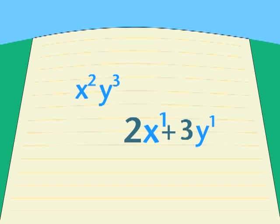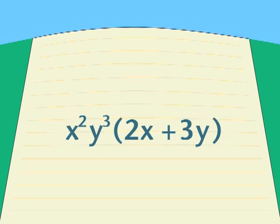Here, it is 2x from the first term, the plus sign in between, and the 3y from the second term. We put what remains inside parentheses or brackets, and we put the common factor x squared y cubed on the outside. That's just a way of saying the common factor applies to both terms inside the brackets. That's the distributive law.